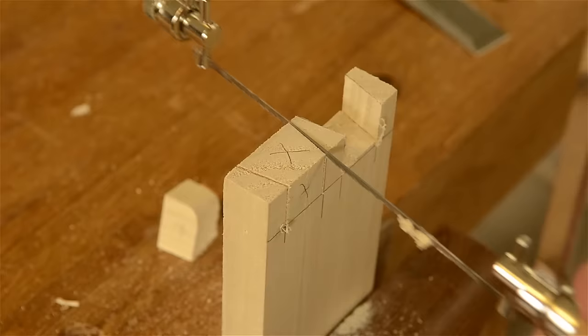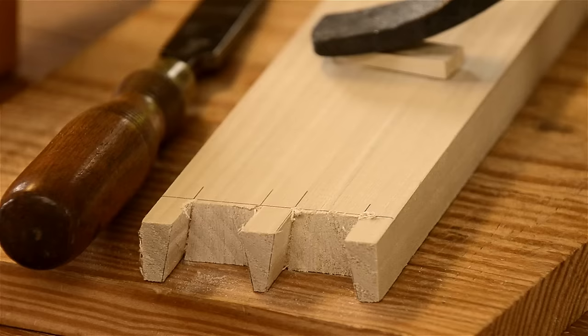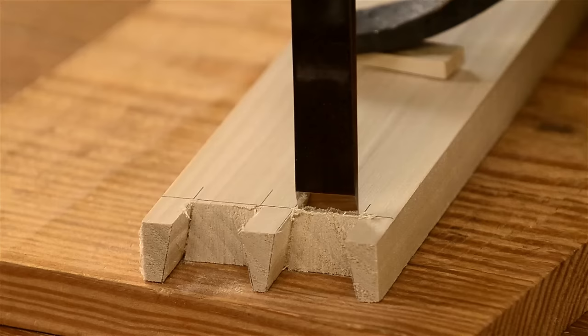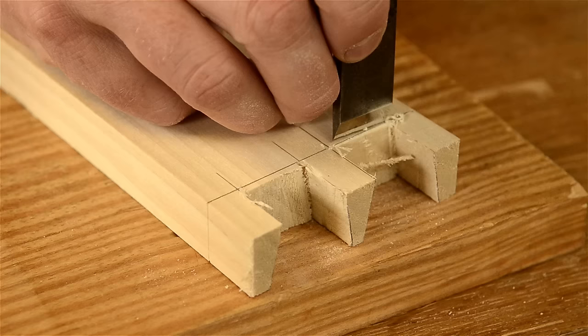Like before, I use a coping saw to remove the waste from the pin board. Now I turn to using a chisel to chop out the remaining waste. I also like to start with the board in this configuration, which will make more sense in a minute. And like before, I try to remove half of the waste until I'm really close to the baseline.